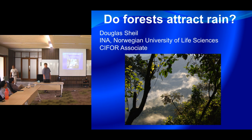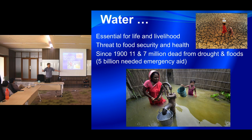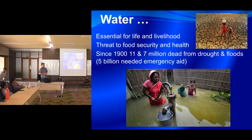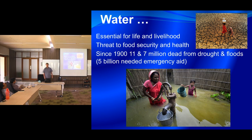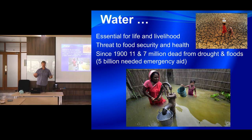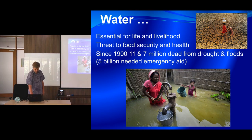Water is absolutely essential for lives and livelihoods. Life on the planet requires good water supplies. Declining access to water is associated as a threat to food security and human health. If you look up the official statistics, there's been 11 million people killed in droughts, 7 million people killed in floods in the last century, and 5 billion people needing emergency aid. So reliable access to water is a really key thing, whatever you're interested in — the environment, people, livelihoods, food security.